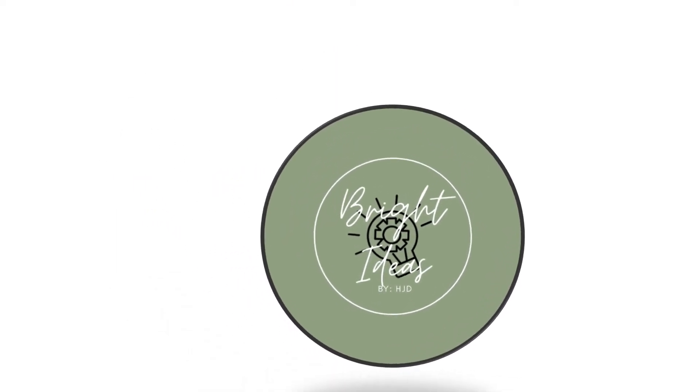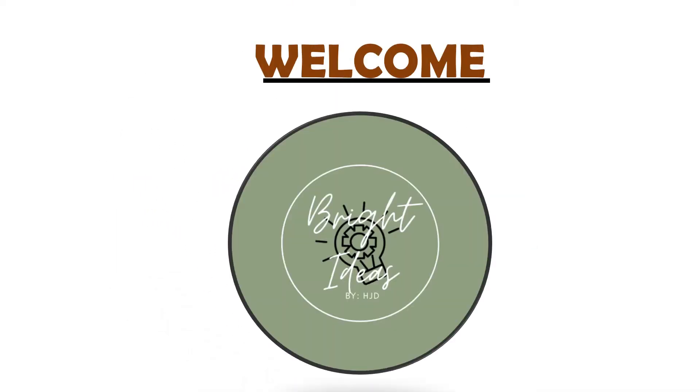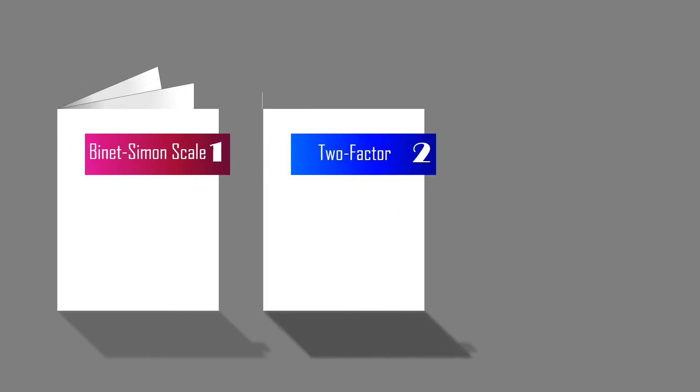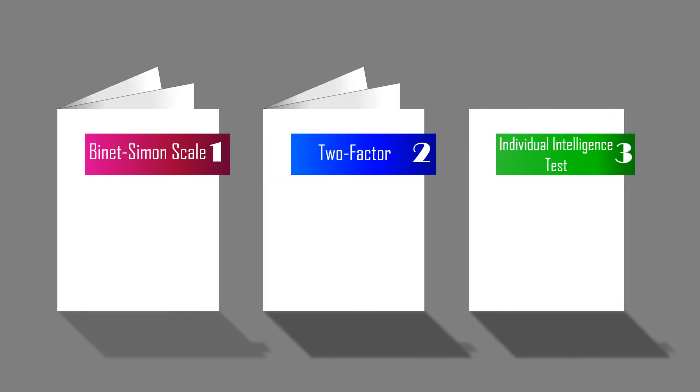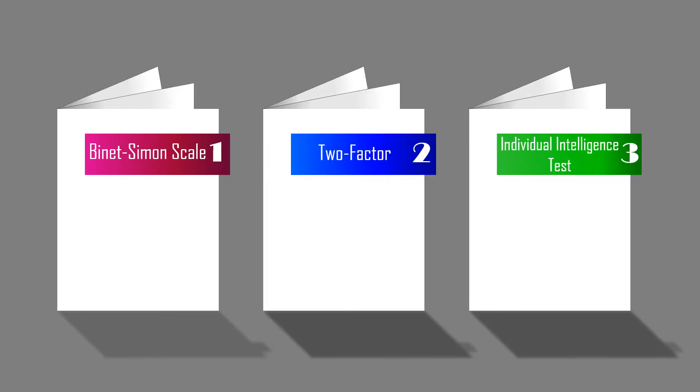Hi, this is Jay. Welcome to Bright Ideas. Here are the first three theories and definitions of intelligence: the Binet-Simon scale, Spearman's two-factor theory of intelligence, and Thurman's Stanford-Binet individual intelligence test.